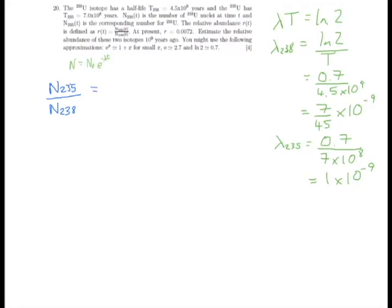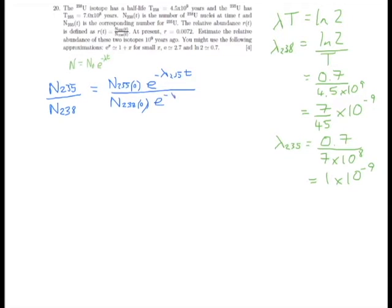So let's form ratios out of both sides of this equation. N₂₃₅(0) — the initial abundance 10⁹ years ago — multiplied by e to the minus λ₂₃₅ times T, which will be 10⁹, all divided by the equation for 238: N₂₃₈(0), the initial abundance of N₂₃₈, multiplied by e to the minus λ₂₃₈ times T. Now this ratio at the current time we know is 0.0072, and the initial ratio is what we're seeking to find — let's call that r₀.